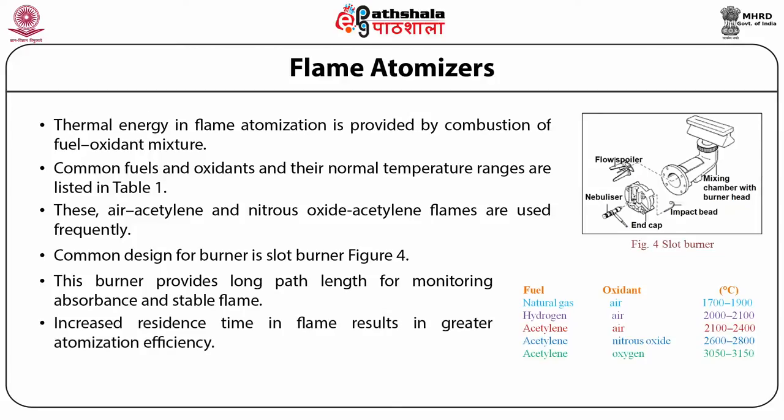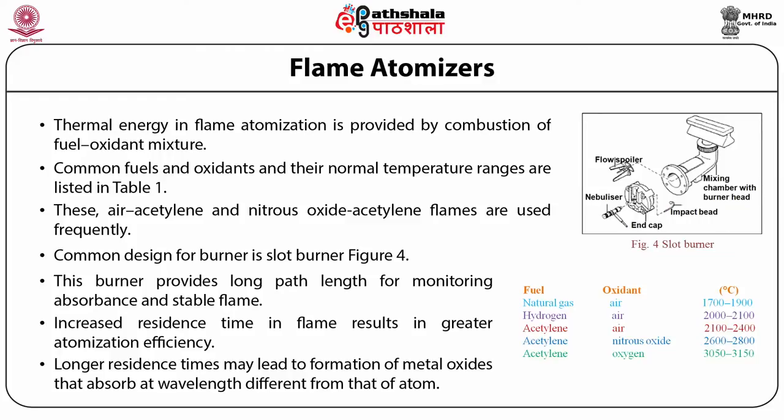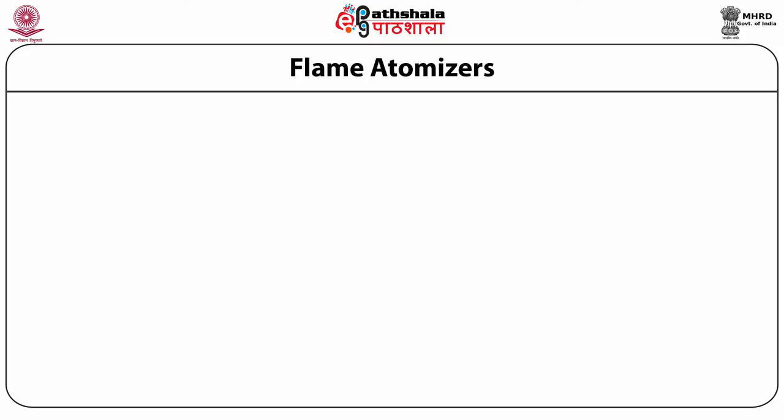An increased residence time in the flame results in greater atomization efficiency, so the production of free atoms increases with height. On the other hand, longer residence times may lead to the formation of metal oxides that absorb at a wavelength different from that of the atom. For easily oxidized metals such as chromium, the concentration of free atoms is greatest just above the burner head. For metals such as silver which are difficult to oxidize, the concentration of free atoms increases steadily with height. Other atoms show concentration profiles that maximize at a characteristic height.